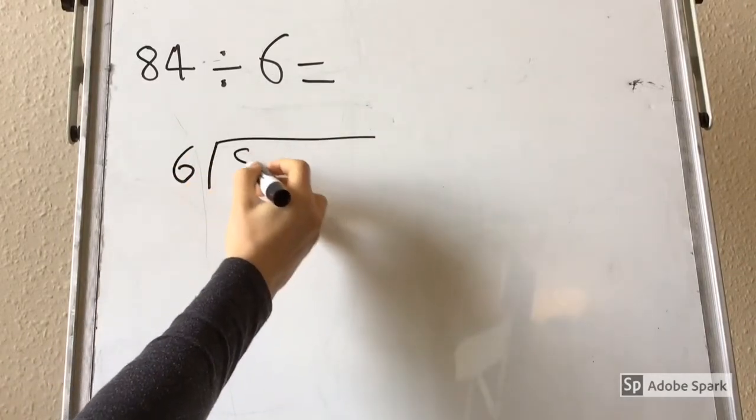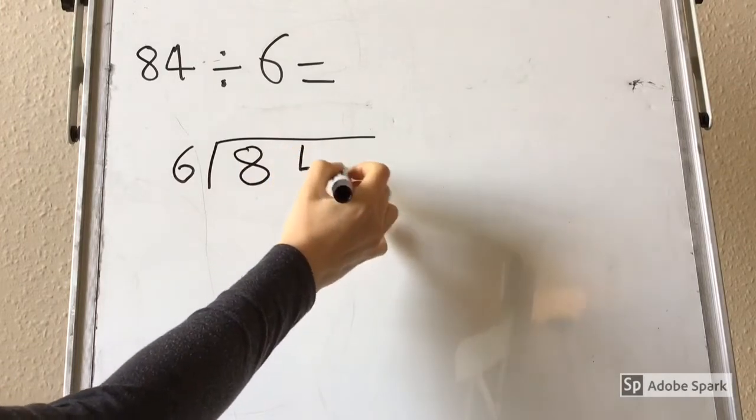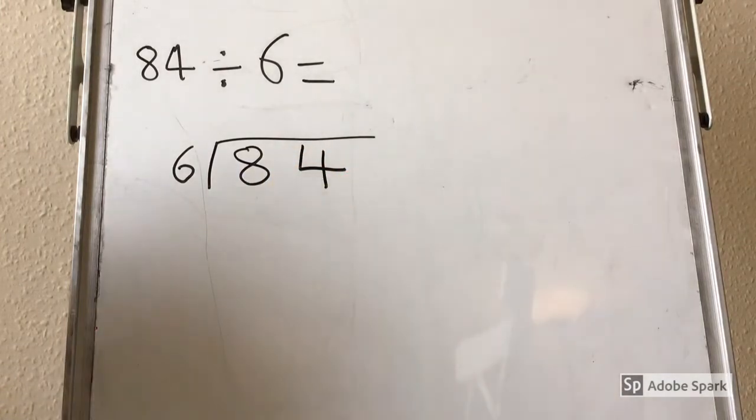We use the bus stop method with the divisor on the left, the number we are dividing by, and the dividend on the right, the number we are going to be dividing.